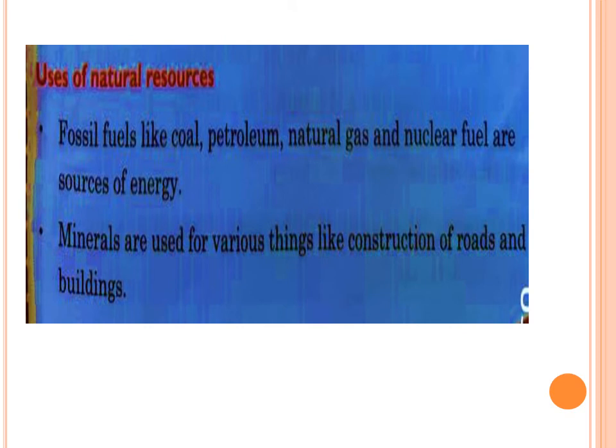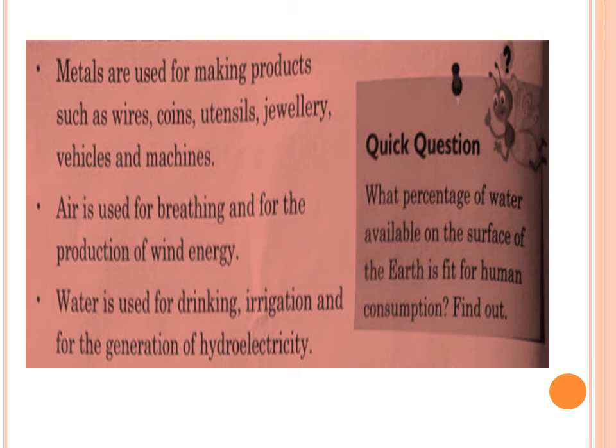Now, what are the uses of natural resources? When we talk about fossil fuels like coal, petroleum, natural gas and nuclear fuel, they are the sources of energy — we use these as the source of energy. Minerals are used for various things, like construction of roads and buildings. Metals, which are also natural resources, are used for making products like wire, coins, utensils, jewelry, vehicles and machines.